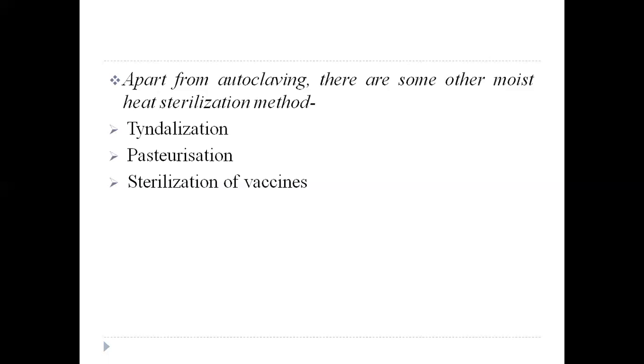The first heating destroys the vegetative cells but not the bacterial spores. The bacterial spores germinate into vegetative forms in the interval between the first and second heating and are killed during the second heating process.